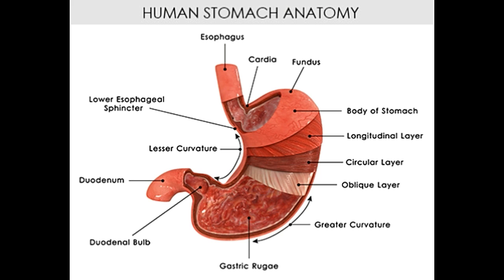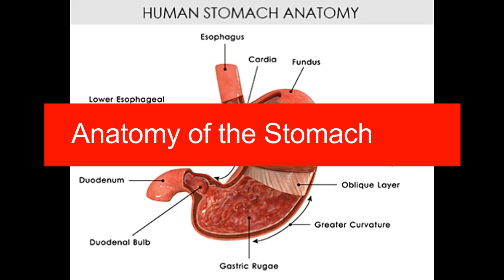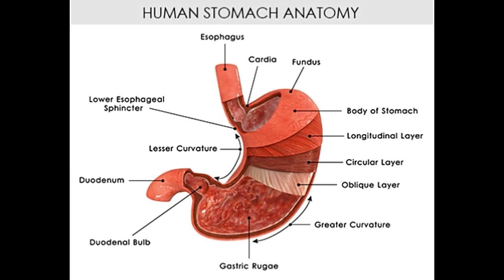The human stomach has two surfaces, two orifices, and two curvatures. The two orifices of the stomach are called the cardiac orifice and the pyloric orifice. The cardiac orifice is located on the left, at the level of the 10th thoracic vertebra (T10). The pyloric orifice lies at the level of the 1st lumbar vertebra (L1) and is the opening from where food travels towards the duodenum.